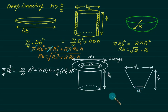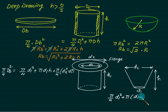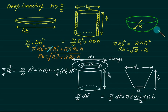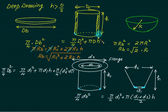When calculating the blank diameter for a flanged cup, the circumferential area can be computed using the mean diameter: π·((D1+D2)/2)·H. Equate all areas with the blank diameter. Note that in practice, no part has perfectly sharp edges — there is always a small rounding radius. In these calculations we neglect the round radius, though handbooks provide correction factors of approximately 0.5R.